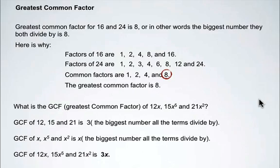So the greatest common factor of 12x, 15x to the 5, and 21x squared is 3x. 3x can go into each of these three terms.